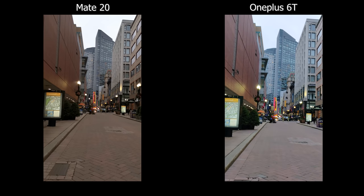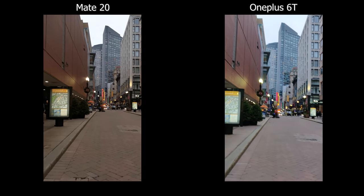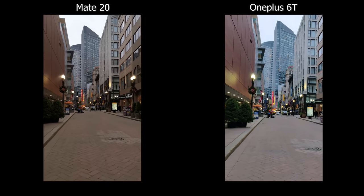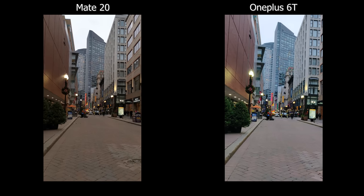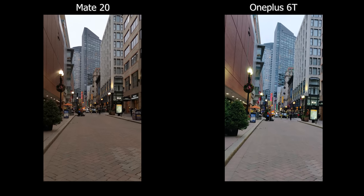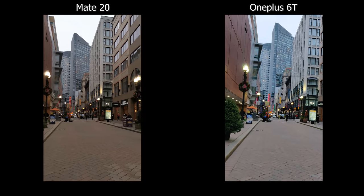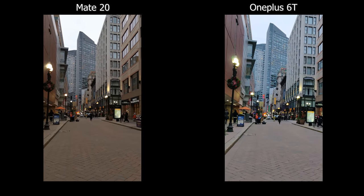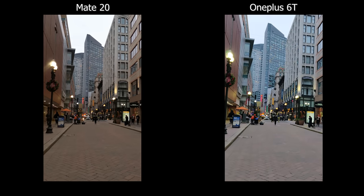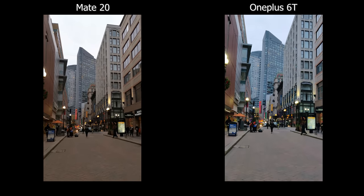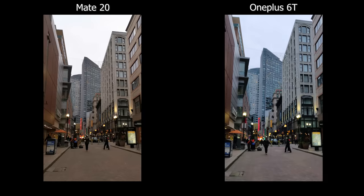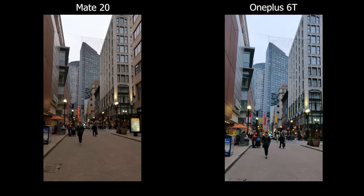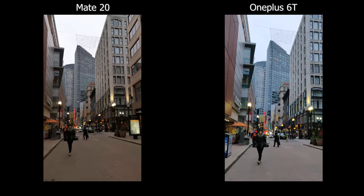Moving on to video at 4K 30, the stabilization on the OnePlus 6T is much better than the Mate 20. But the trade-off is that the OnePlus 6T has more jitter due to the electronic stabilization trying to correct itself. For color, the Mate 20 is much warmer than the OnePlus 6T.